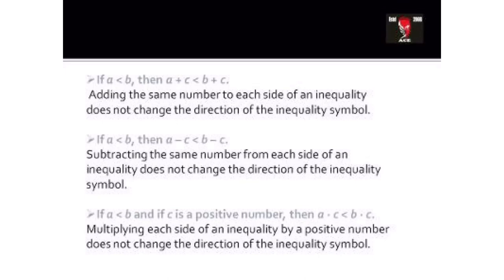The first rule: if in a linear inequation the left hand side is less than the right hand side — say a is less than b — then if you add the same number on both sides, the sign of inequality will not change. For example, 3 is less than 5; if I add 2 on both sides, I get 5 and 7, so 7 is still greater than 5.